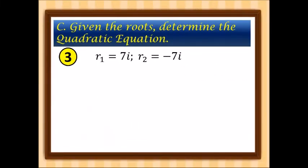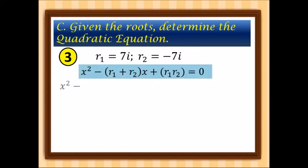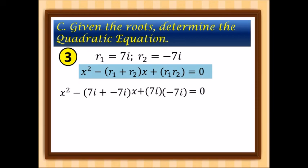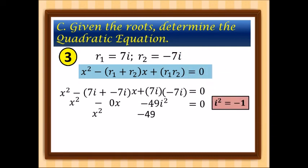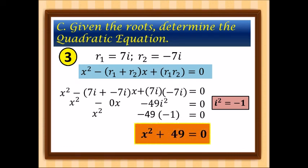Last example with roots r sub 1 equals 7i and r sub 2 equals negative 7i. Substituting: x squared minus (7i plus negative 7i)x plus (7i times negative 7i) equals 0. The sum 7i plus negative 7i equals 0, so that term is 0x. The product gives negative 49i squared, and since i squared equals negative 1, we get negative 49 times negative 1 equals 49. Therefore the equation is x squared plus 49 is equal to 0.